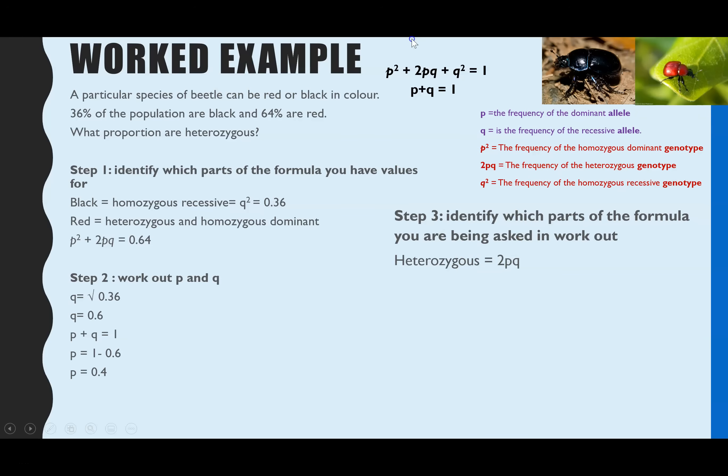As I said, you don't need to rearrange all this formula. You can jump straight to working out what 2PQ is by doing 2 times P times Q. And in this case, that comes to 0.48, or if you were asked to represent it as a percentage, 48% are heterozygous.